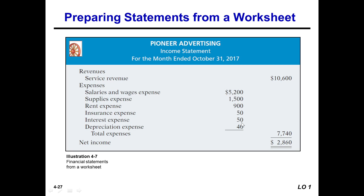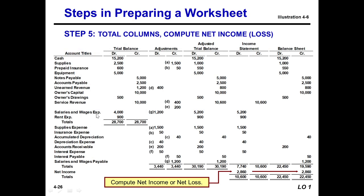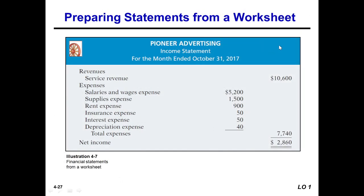We have six expenses: salary expense, rent expense, supplies expense, insurance expense, depreciation expense, and interest expense — six expenses in total. After adding all six expenses together we get the figure of seven thousand seven hundred forty.